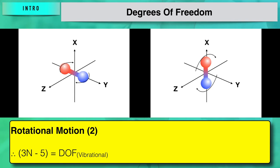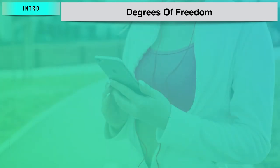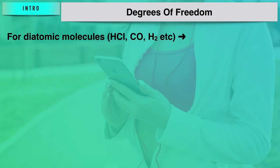For linear molecules with n atoms, three degrees of freedom are for translational motions and two are for rotational motions, giving 3 plus 2 equals 5. So the vibrational degrees of freedom remaining are 3n minus 5. Let us find the vibrational degrees of freedom for certain diatomic and linear polyatomic molecules.